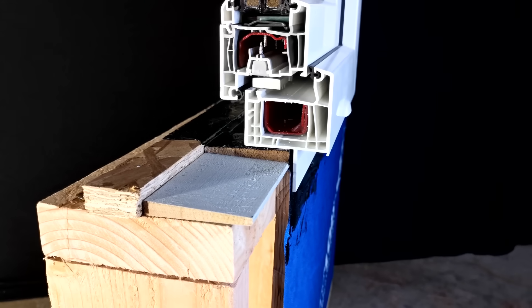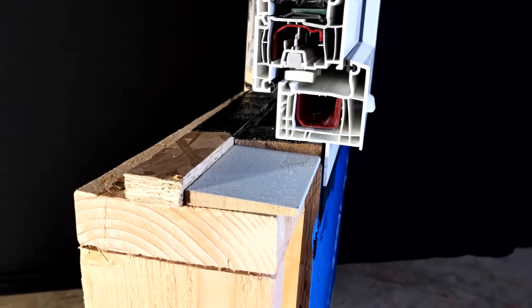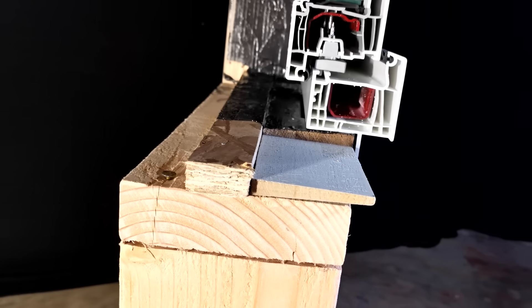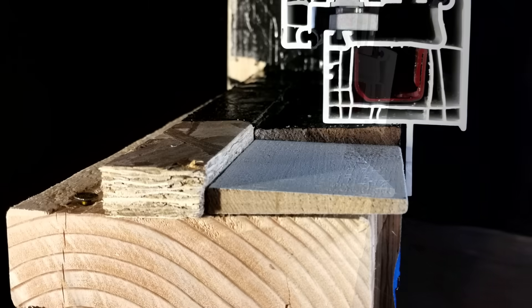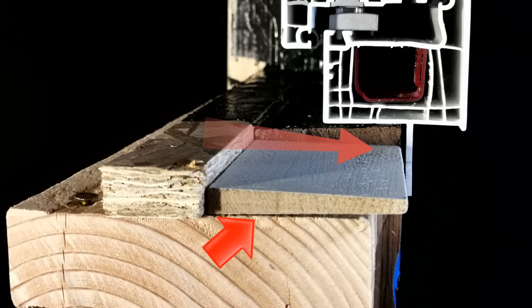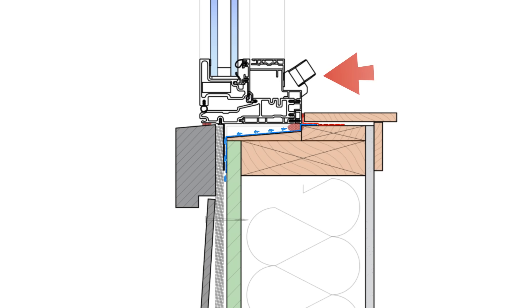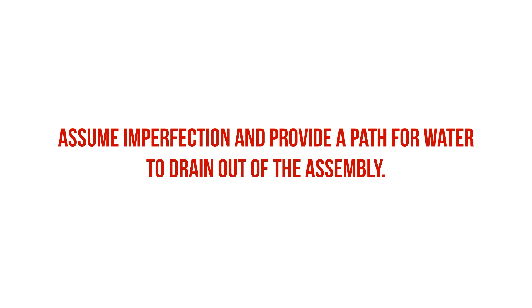First, let's take a look at what's going on around the rough opening. We've provided a slope to the sill using a ripped piece of beveled siding, but you could also use a double sill and taper that secondary 2x to accomplish that slope. We want the benefits of a slope around the sill to drain water away from the wall if and when it gets inside. We are assuming imperfection and providing a means of drainage.